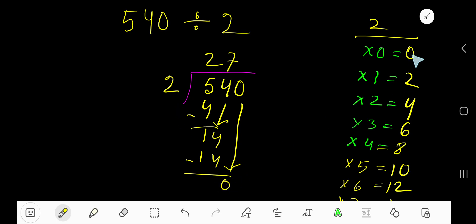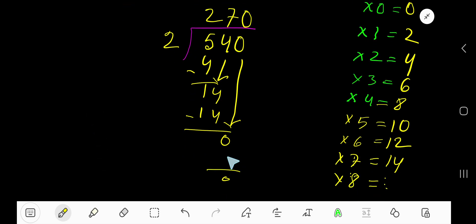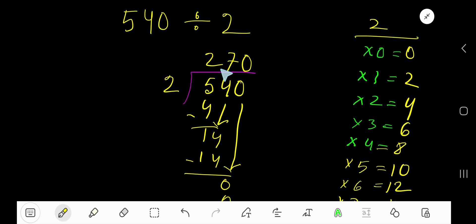2 goes into 0 zero times, right? 0 times 2 is 0. If you subtract, you're getting 0. Since your remainder is 0, you need to stop. 270 is your answer.